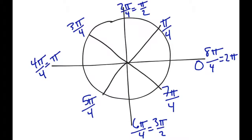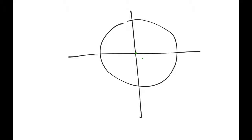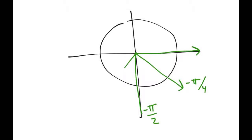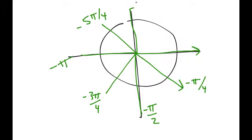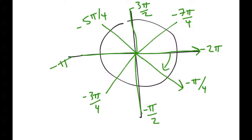For the clockwise direction, all you do is make everything negative. So if you're going the other direction and you start at 0, then this would be negative pi over 4, then negative pi over 2, negative 3 pi over 4, negative pi, negative 5 pi over 4, negative 3 pi over 2, negative 7 pi over 4, and then back to negative 2 pi. All you do is make everything negative going the other direction, and it works exactly the same way.